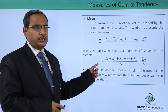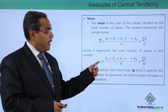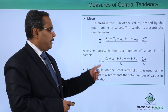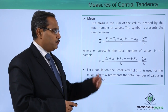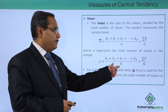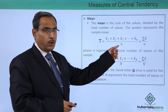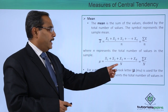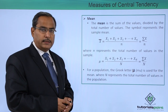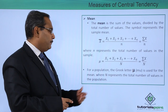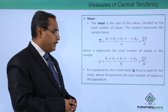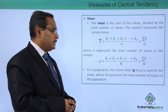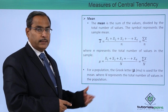In case of population, the mean will be calculated and expressed in the form of mu (μ). Here we have x₁ + x₂ + ... + xₙ and the addition will be divided by capital N, where small n was the size of the sample and capital N is the size of the population. That is σx / N. For a population, the Greek letter μ is used for the mean, where capital N represents the total number of values in the population.